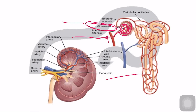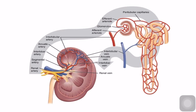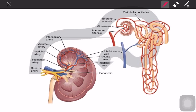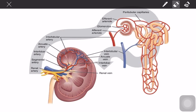To recap: in the glomerulus, filtration takes place; the filtrate then travels to the Bowman's capsule for urine formation. From there, it travels to the renal tubule — the structure that connects to the Bowman's capsule. The renal tubule is divided into four parts: the proximal convoluted tubule, the loop of Henle, the distal convoluted tubule, and the collecting ducts.